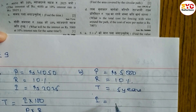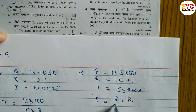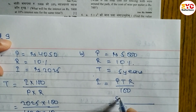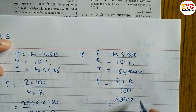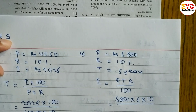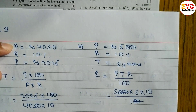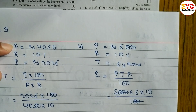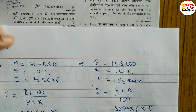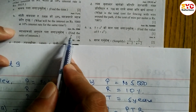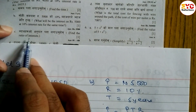So I is equal to PTR divided by 100. P is 5000, T is 5 years, R is 10%, divided by 100. After cancelling zeros, 5 fives are 25, giving us rupees 2500.